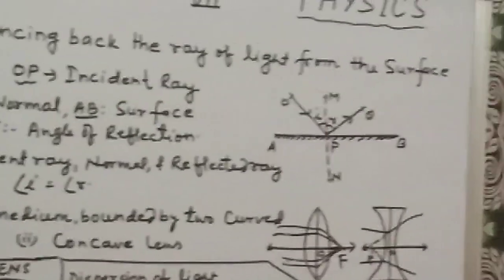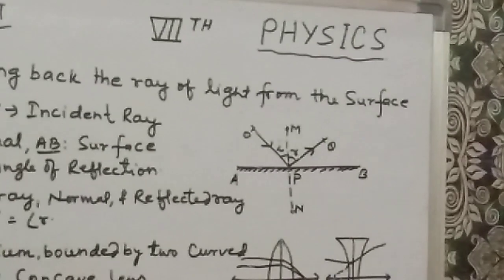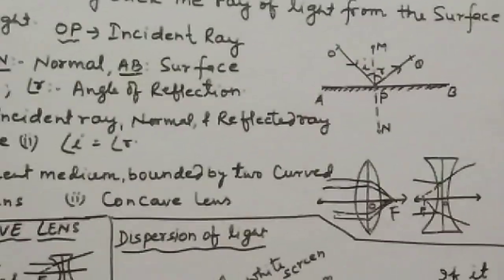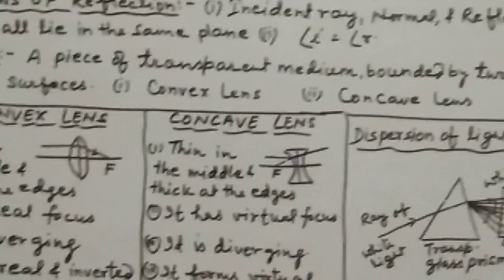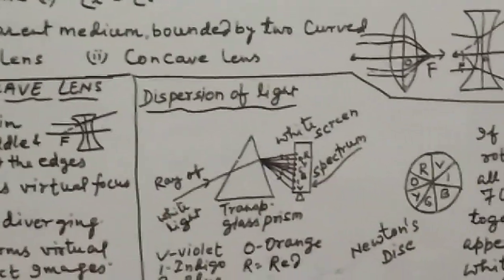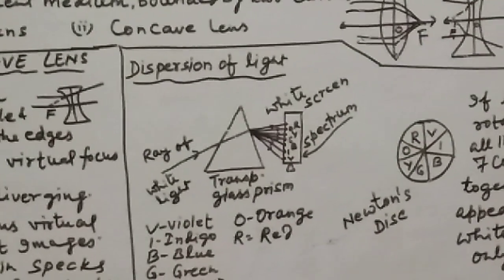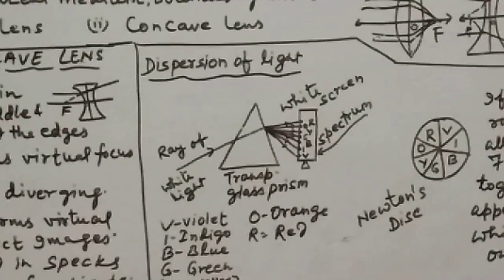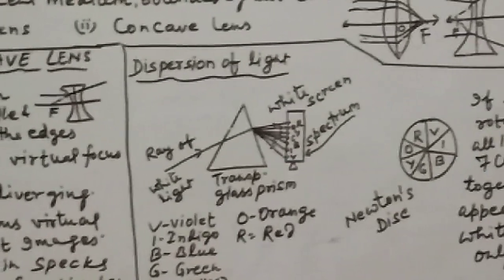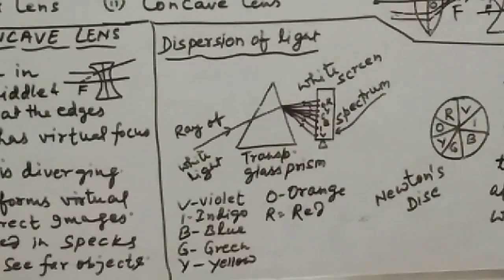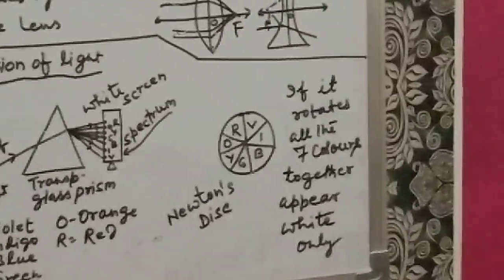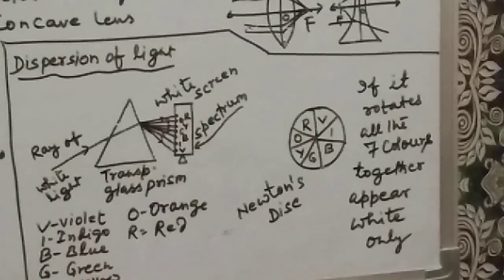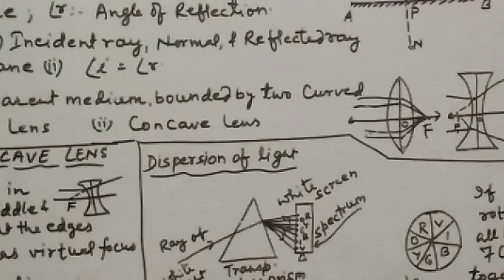Now see the figures. This figure is reflection of light. These are the two lenses — converging and diverging — and this shows the difference between them. This is dispersion of light: a ray of white light passing through a glass prism and splitting into seven different colors, which are written here. And this is Newton's disc — when you rotate it, it appears white.